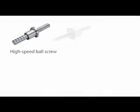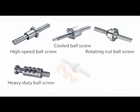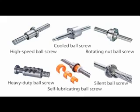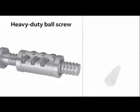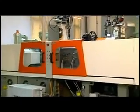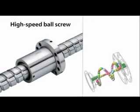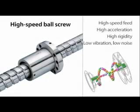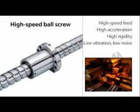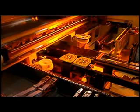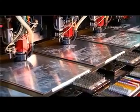Ball screws have undergone many improvements and innovations since they were first commercialized, and today many different types have been developed. Heavy-duty ball screws must withstand high axial loads and are used in all-electric injection machines, stamping machines, semiconductor manufacturing equipment, and forging machines. High-speed ball screws have high-speed velocity and high acceleration; they must be highly rigid and have low noise and vibration. They are used in fast feeds for machine tools, high-speed mold-cutting center machines, and high-speed general cutting center machines.